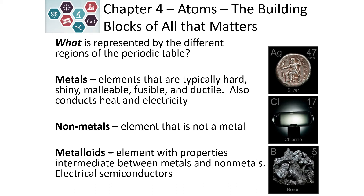Metals also conduct heat and electricity very well. Non-metals are elements in the upper right-hand corner that are not metals, and they exhibit properties that are opposite of metals. So they're typically soft, they don't conduct heat, and they don't conduct electricity. An example of that would be chlorine.